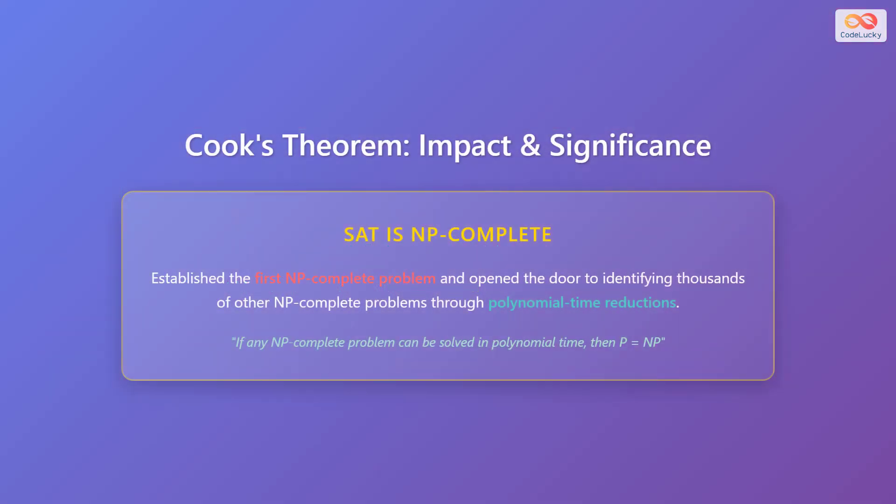In conclusion, Cook's theorem demonstrates that SAT is NP-complete. This result established the first NP-complete problem and opened the door to identifying thousands of other NP-complete problems through polynomial time reductions. The significance of Cook's theorem can be summarized as follows: if any NP-complete problem can be solved in polynomial time, then P equals NP. This would have massive implications for cryptography, optimization, and many other fields.